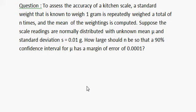a total of n times, and the mean of the weightings is computed. Suppose the scale readings are normally distributed with unknown mean μ and standard deviation s = 0.01. How large should n be so that a 90% confidence interval for μ has a margin of error of 0.0001?